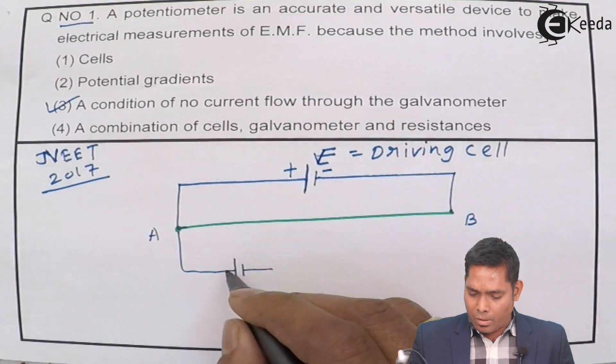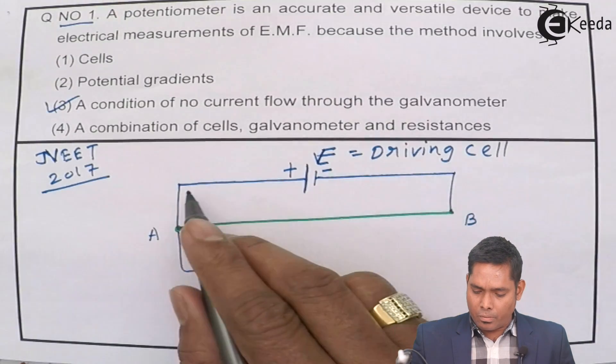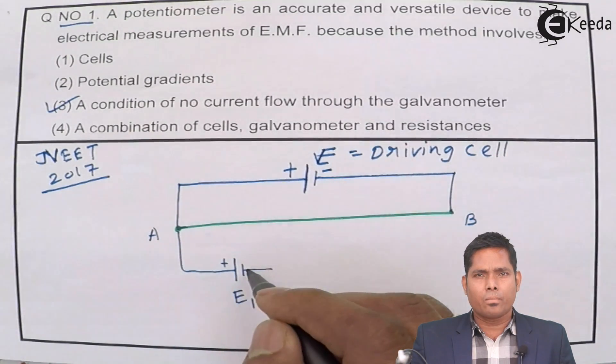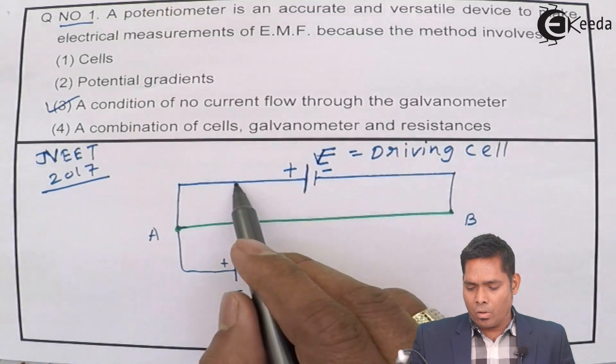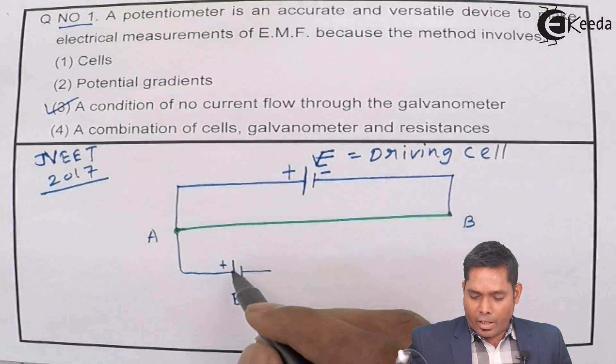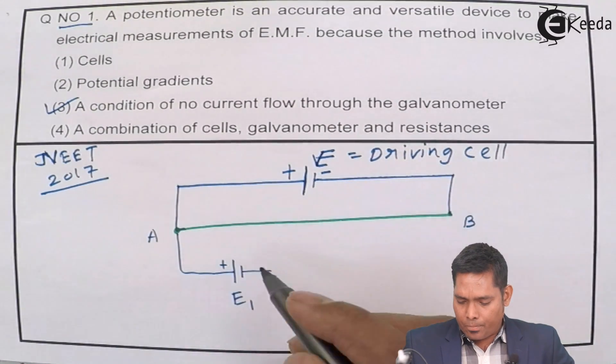So I connect the positive terminal of this with the positive of this one. It should not be negative here and positive there. So this is the proper arrangement. Positives of the higher potential end of this is connected to the higher potential of the unknown cell.